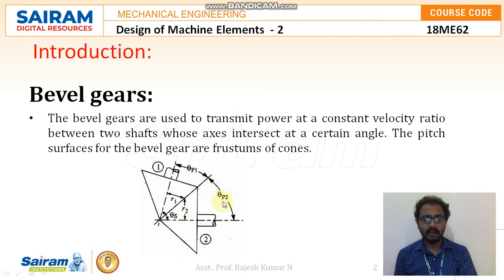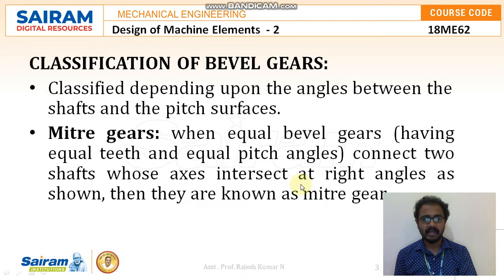So theta_p1 and theta_p2, and r1 and r2, are the radii of the driver and follower shafts respectively — that is, for bevel gear 1 and bevel gear 2.